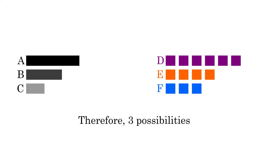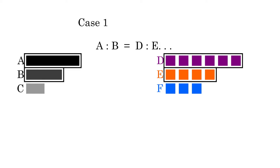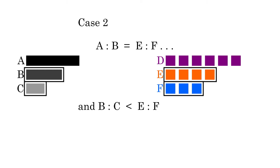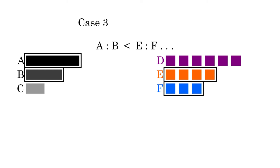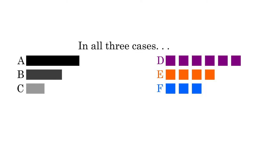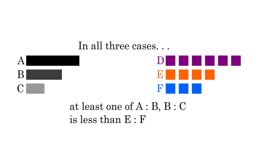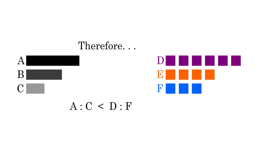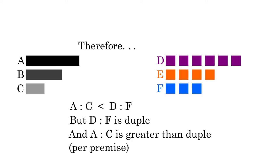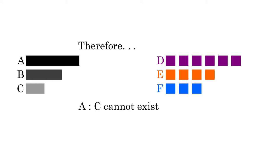That leaves us with three possibilities. Case 1 is that a to b is equal to d to e, while b to c is smaller than e to f. Case 2 is that a to b is equal to e to f, while b to c is smaller than e to f. Case 3 is that a to b is smaller than e to f, and b to c is smaller than both of them. We don't need to ponder the three cases too closely, because they all have one thing in common: in all three cases, at least one of the intervals on the left-hand side is smaller than e to f. If that's true, then the sum of the left-hand intervals, a to c, will have to be smaller than the sum of the right-hand intervals, d to f. But we know that d to f is duple, and that a to c is greater than duple. So a to c must be both less than duple and greater than duple, which is impossible. Therefore a to c cannot exist. Thus we've proven that there is no multiple interval other than the duple that is composed of two epimorics added together.